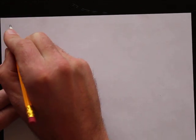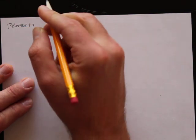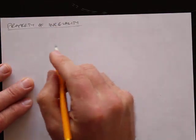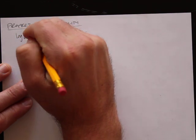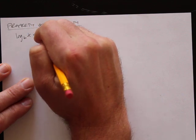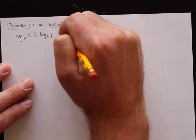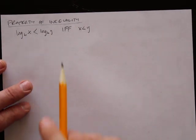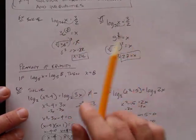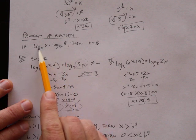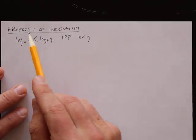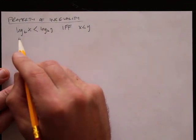A little bit more left in 7-4. Another property of inequality: log base b of x is less than log base b of y if and only if x is less than y. If the bases are the same, we can ignore them and just deal with the numbers — same idea as before but now with an inequality instead of equals.